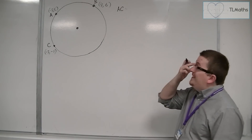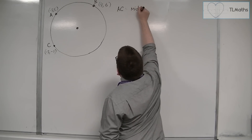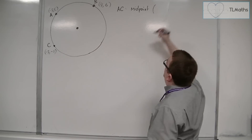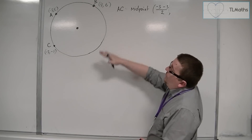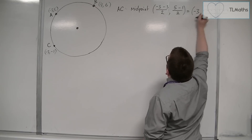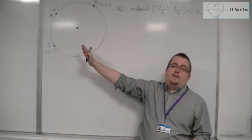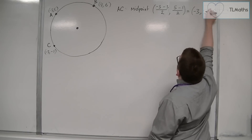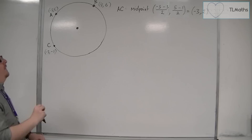The first thing you need to do is find the midpoint of A and C. We find the average of the x-coordinates: minus three plus minus three divided by two. And the same for the y-coordinate: five plus minus one divided by two. That gives us minus three (since minus six divided by two is minus three), and five take away one is four, divided by two is two. So minus three, two is the midpoint of A and C.